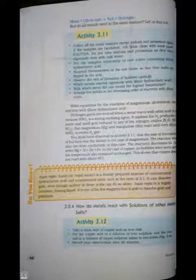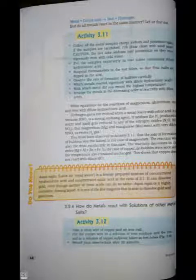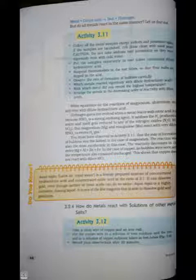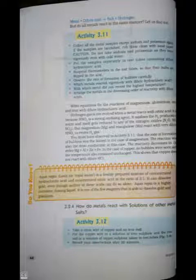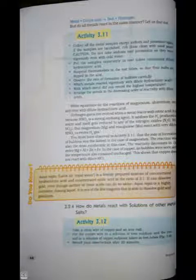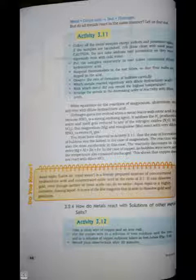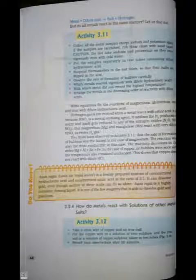But magnesium and manganese react with very dilute HNO3 to evolve H2 gas. You must have observed in activity 3.11 that the rate of formation of bubbles was fastest in the case of magnesium. The reaction was also the most exothermic in this case. The reactivity decreases in the order Mg > Al > Zn > Fe. In the case of copper, no bubbles were seen and the temperature also remained unchanged. This shows that copper does not react with dilute HCl.